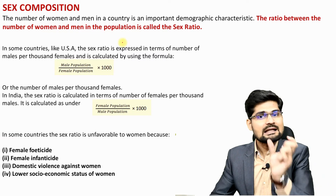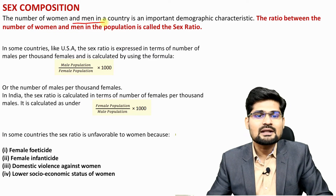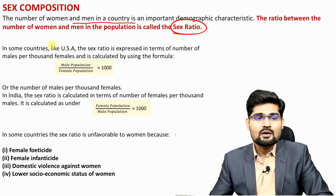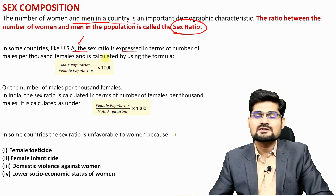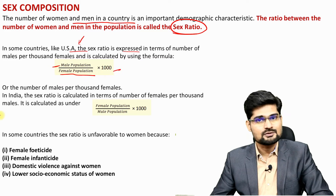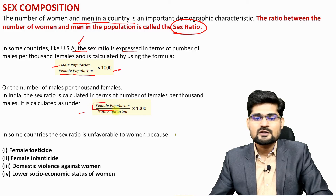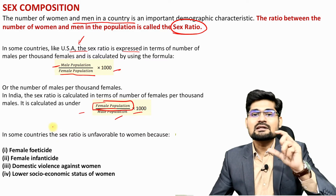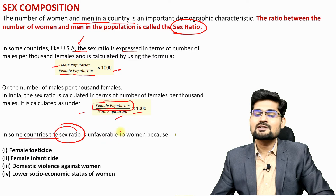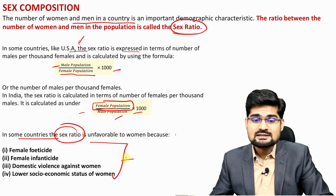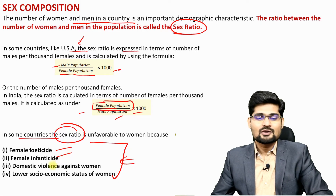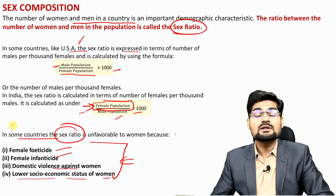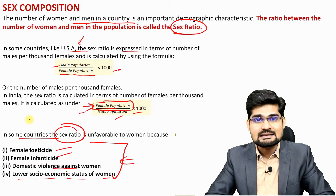The second element of age-sex composition is sex ratio. The number of women and men in a country is an important demographic attribute. In countries like the USA, sex ratio is expressed as male population per female population into 1000, while in India and many other countries, female population is kept as the numerator per male population into 1000. In some countries sex ratio is unfavorable for women, indicating issues like female feticide, infanticide, domestic violence and lower socioeconomic status of women.